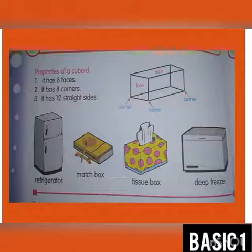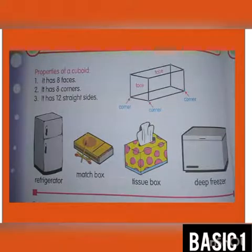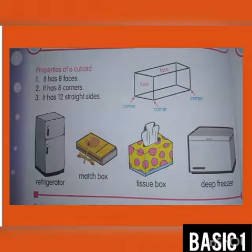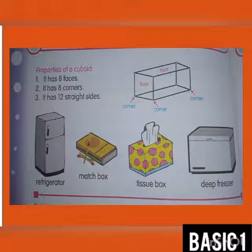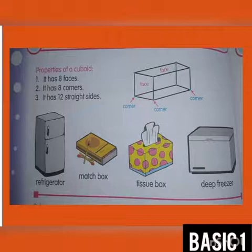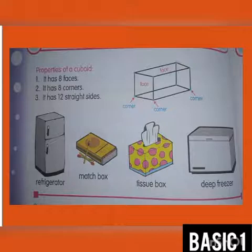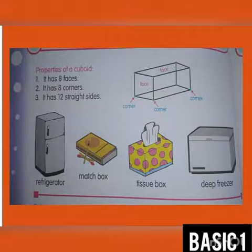A cuboid. You can find this in your math textbook, page 153. Look at the properties of a cuboid. A cuboid has eight faces. The objects below are examples of objects with a cuboid shape. We have the refrigerator, the matchbox which you are conversant with, the tissue box, and the freezer that is in your mommy's kitchen. These are beautiful examples of a cuboid.